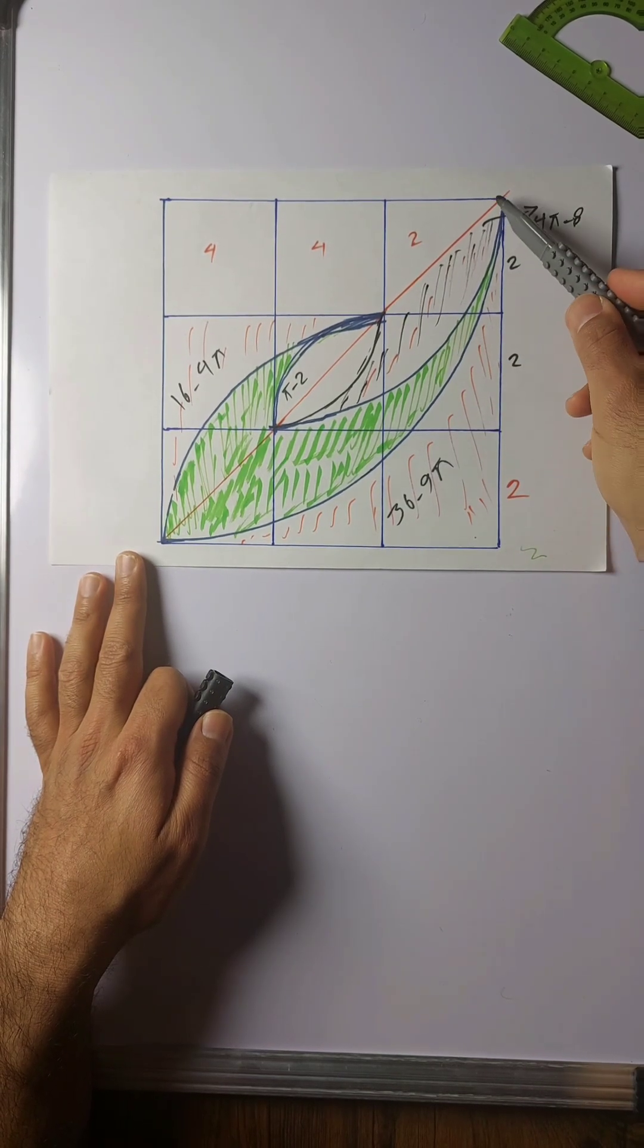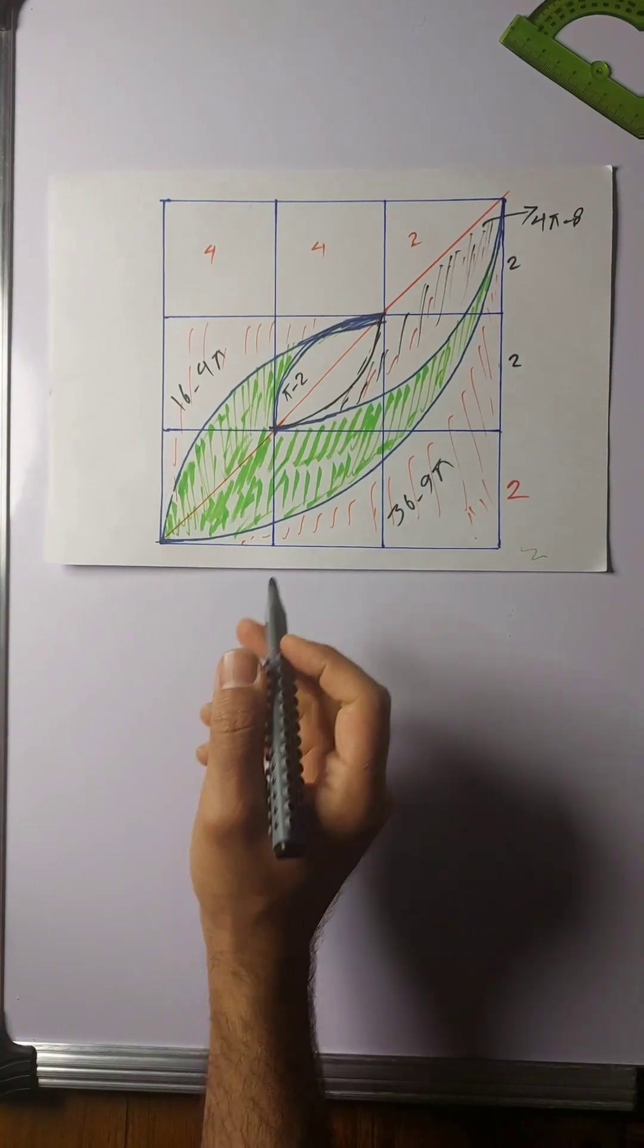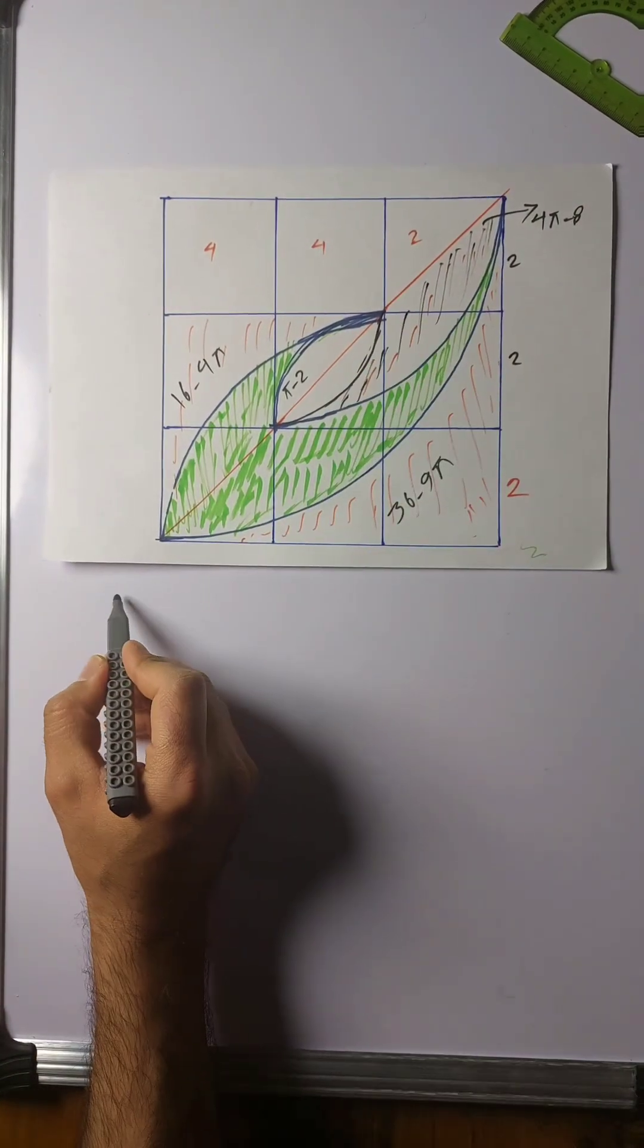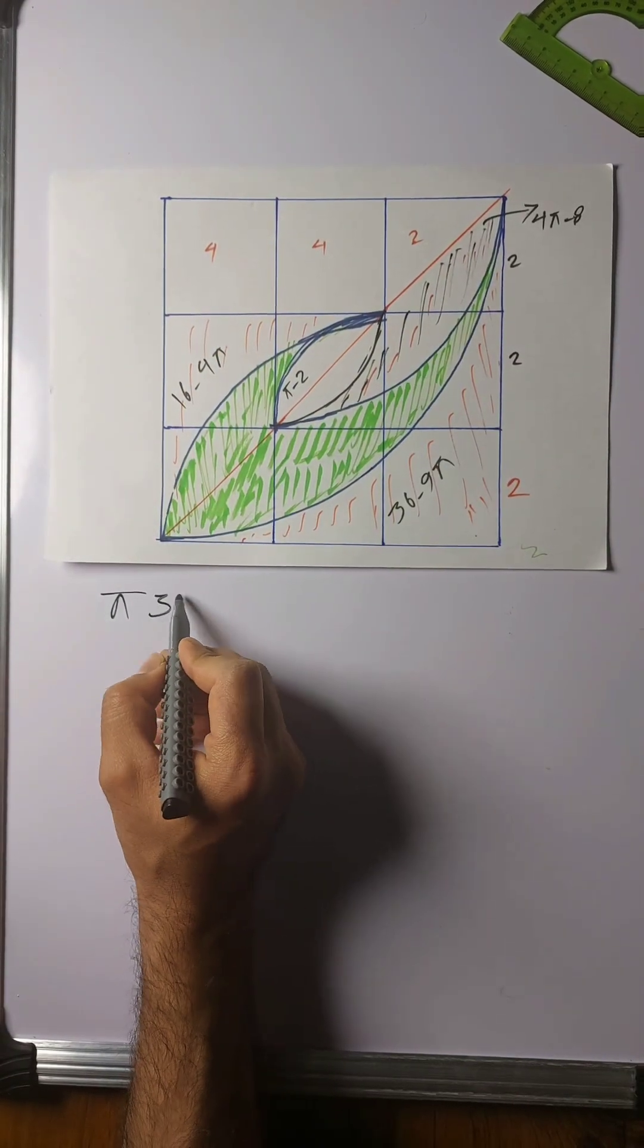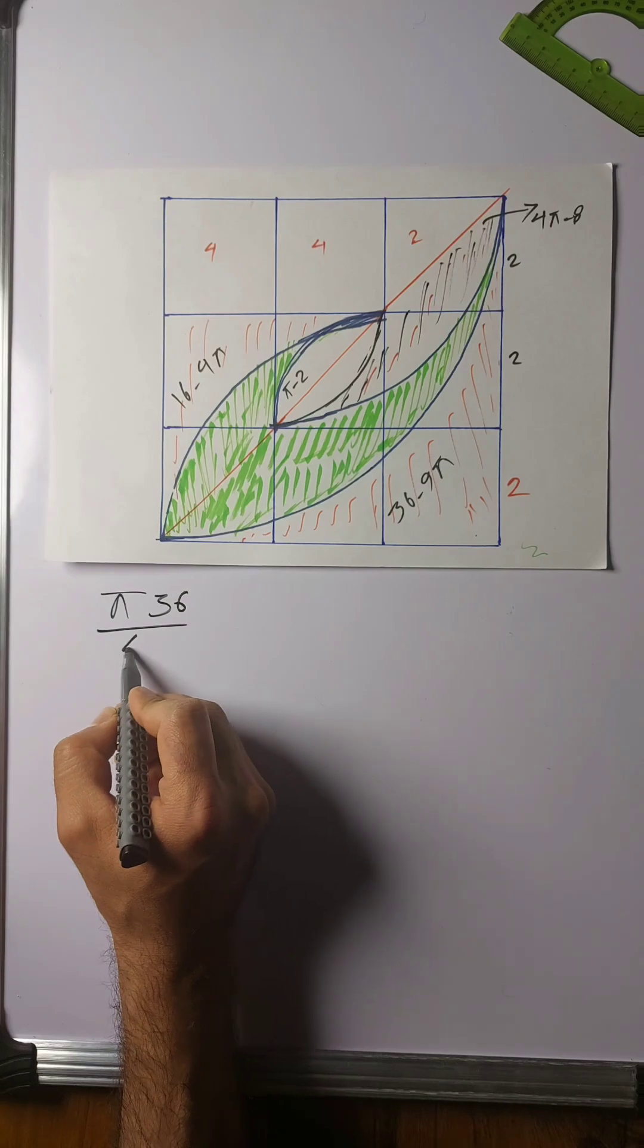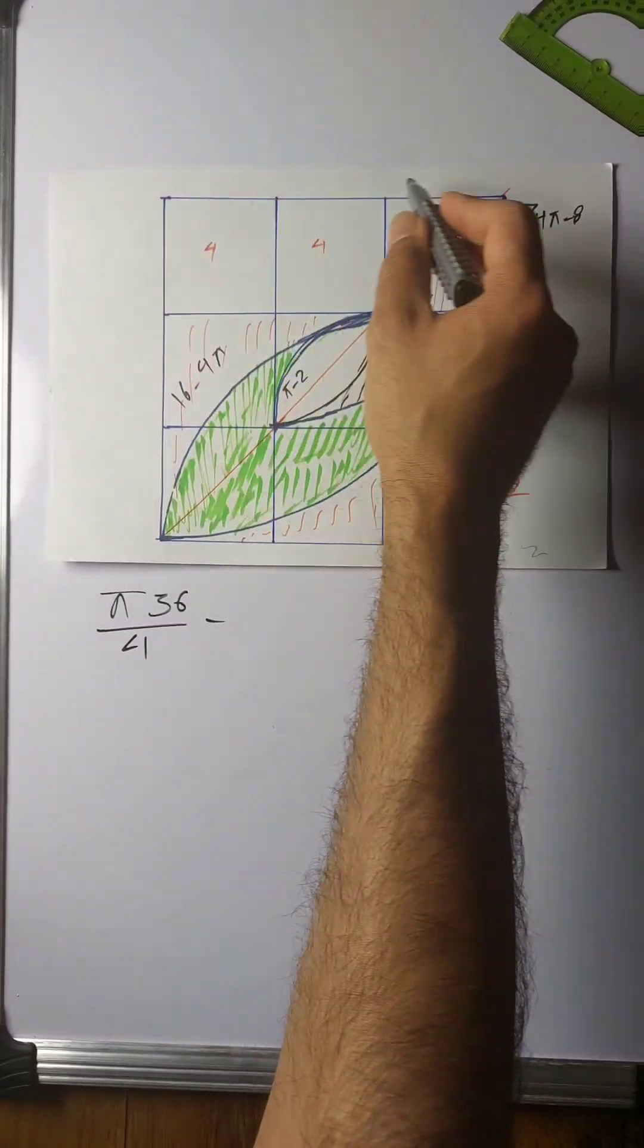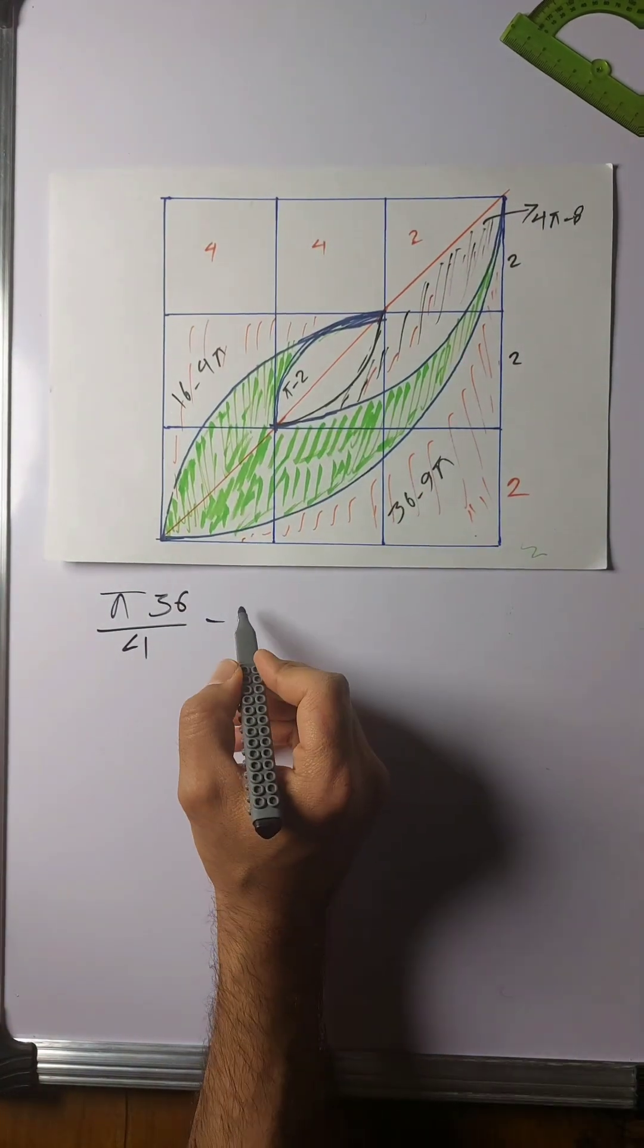The area of this big segment is the area of this quarter circle, which is π r squared. R is 6 here, so 36 over 4, minus the area of this right angle isosceles triangle. So this is 6 times 6 over 2, which is 18. So it becomes 9π minus 18—this big segment here.